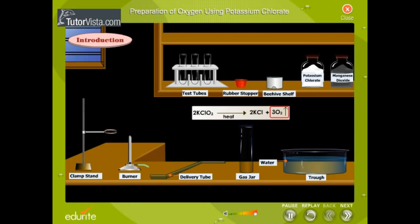Potassium chlorate on heating liberates oxygen gas. This being a very slow reaction, manganese dioxide, a catalyst, is used.